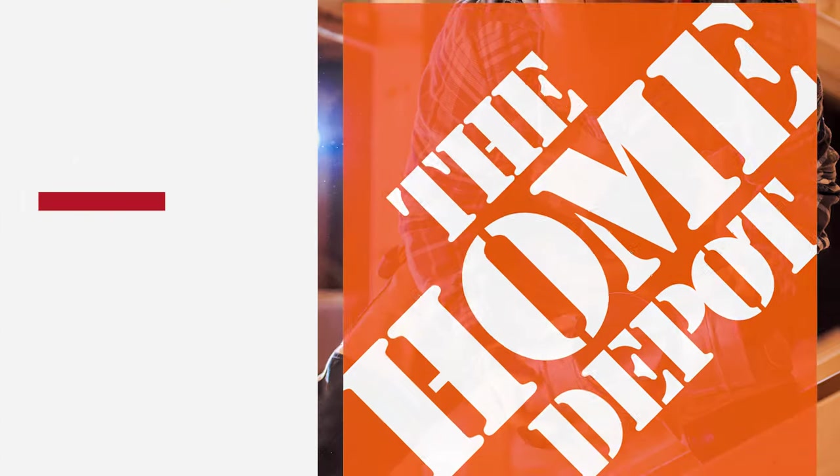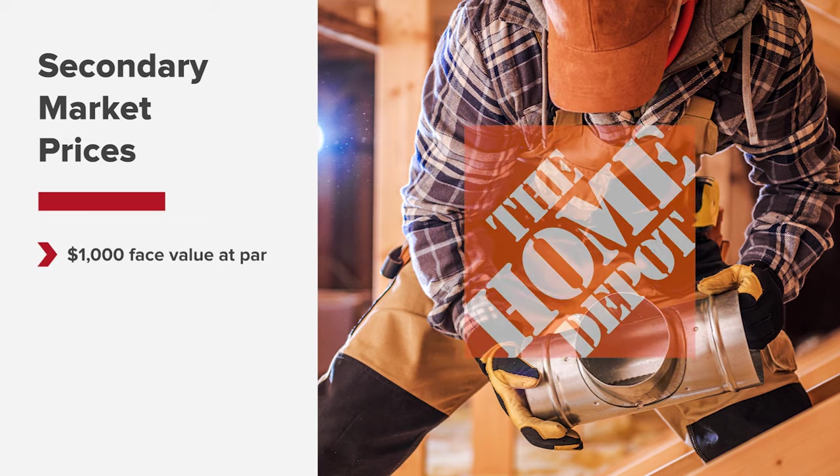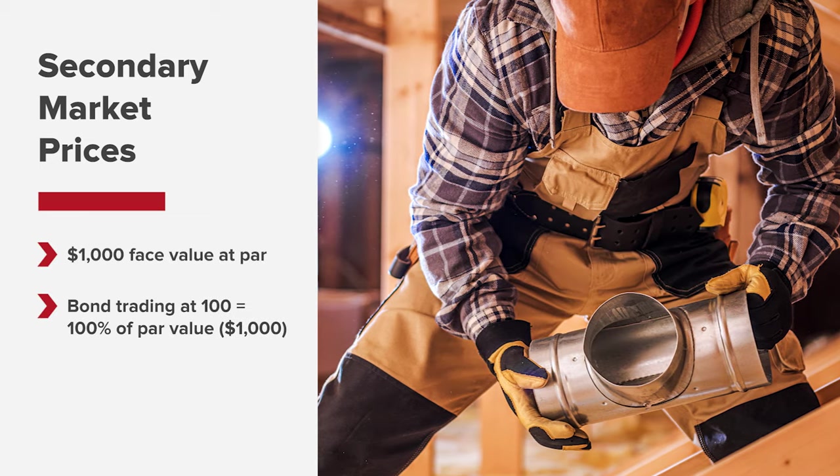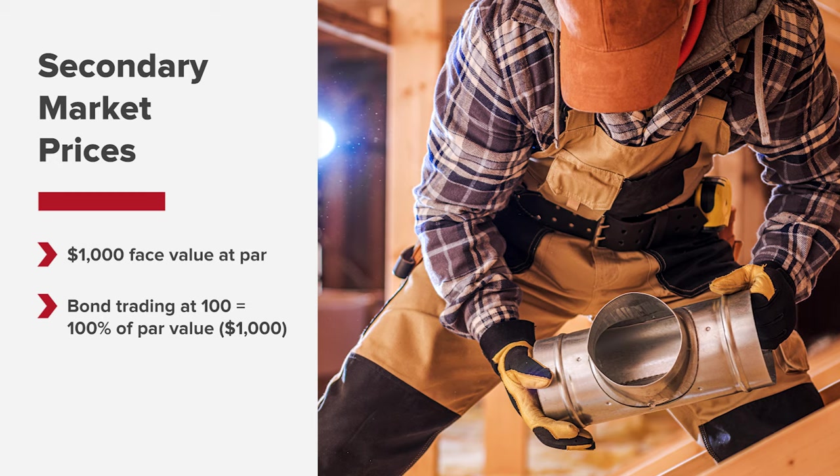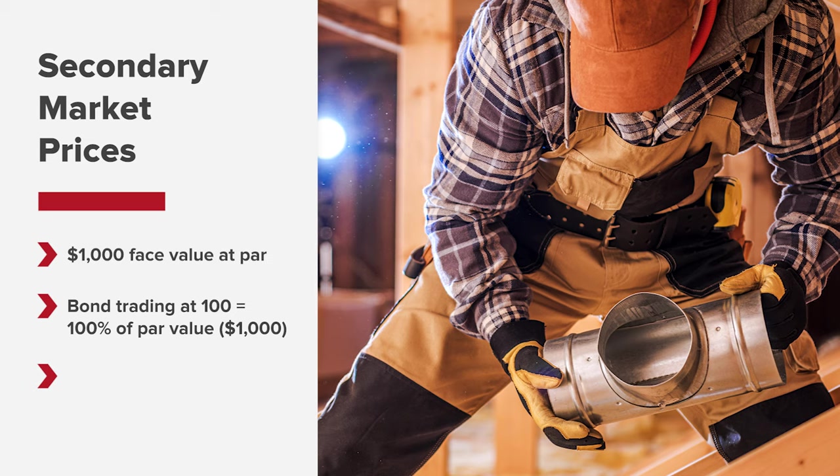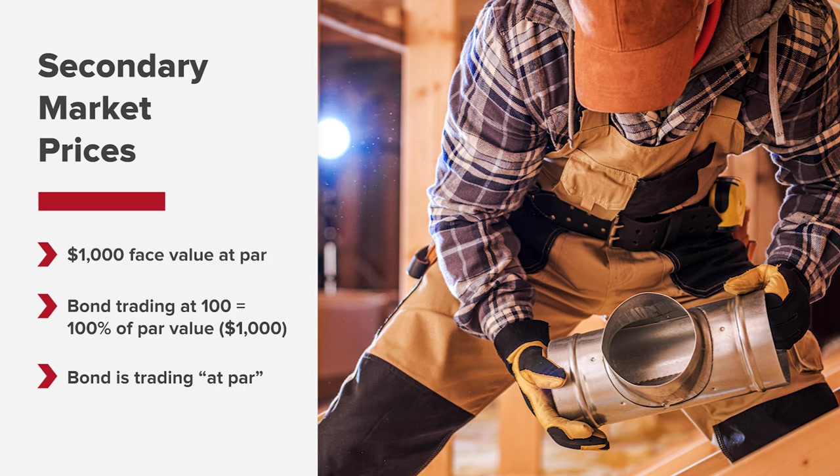Let's say in this instance that this Home Depot bond has a face value of $1,000 at par. If this bond was trading at 100, it would be selling at 100% of its par value, or $1,000, and would be said to be trading at par.